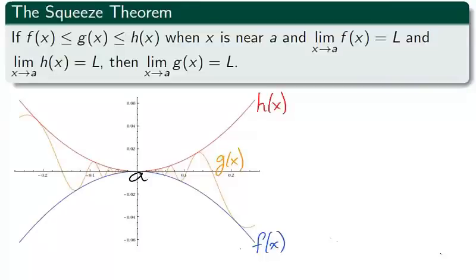The squeeze theorem takes this observation and doubles it up with a squeeze in the middle. That is, there are three functions h on top of g on top of f near a, and the limit of f and h are equal as x approaches a. This pinches the limit of the middle function g to the same limit as h and f as x approaches a.